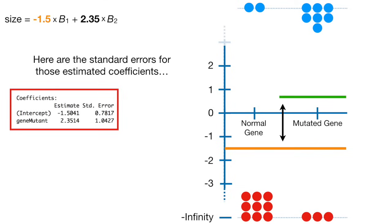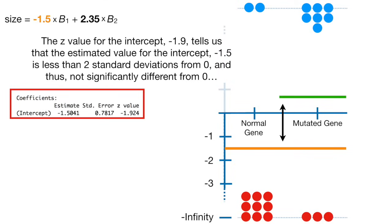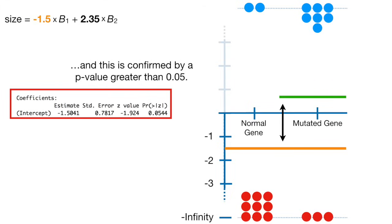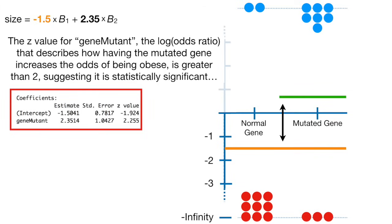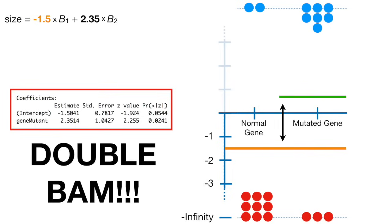Here are the standard errors for those estimated coefficients, and here are the z-values — the Wald's test values — that tell you how many standard deviations the estimated coefficients are from 0 on a standard normal curve. The z-value for the intercept, negative 1.9, tells us the estimated intercept of negative 1.5 is less than 2 standard deviations from 0, and thus not significantly different from 0, confirmed by a p-value greater than 0.05. The z-value for gene mutant is greater than 2, suggesting it is statistically significant, confirmed by a p-value less than 0.05. Double bam! Double bam!